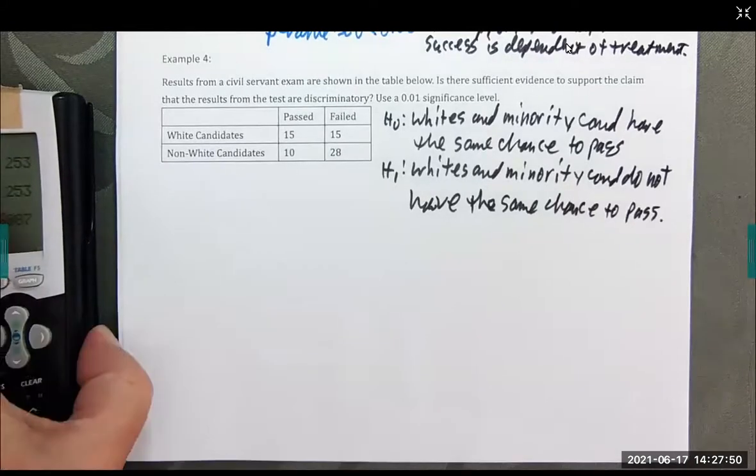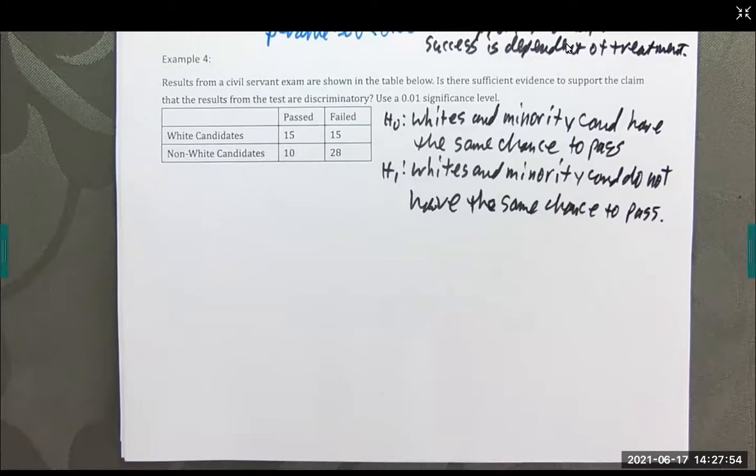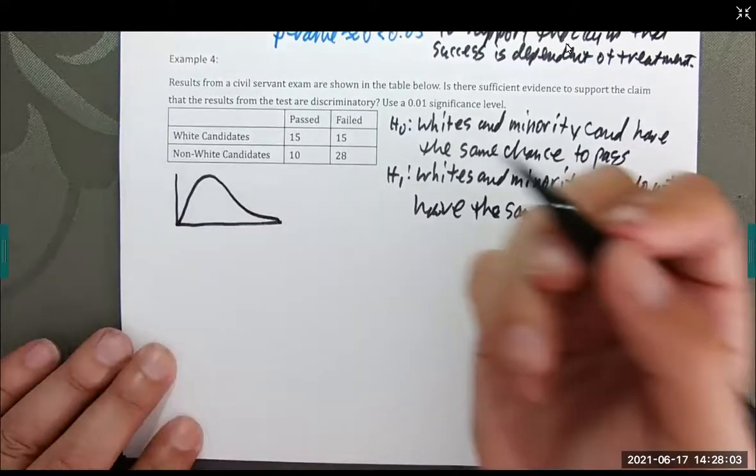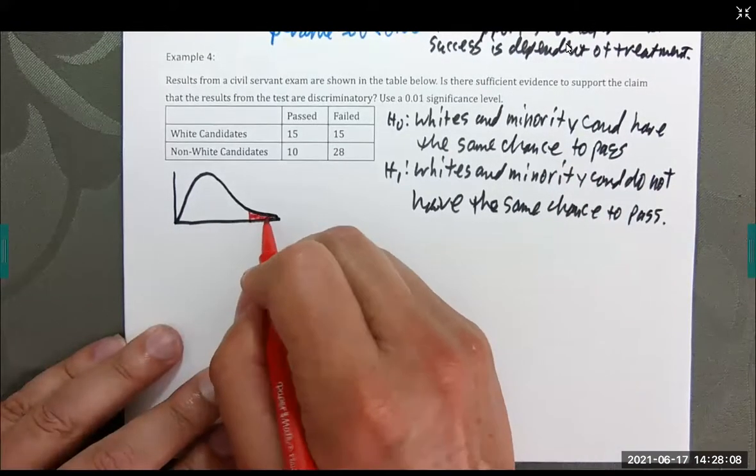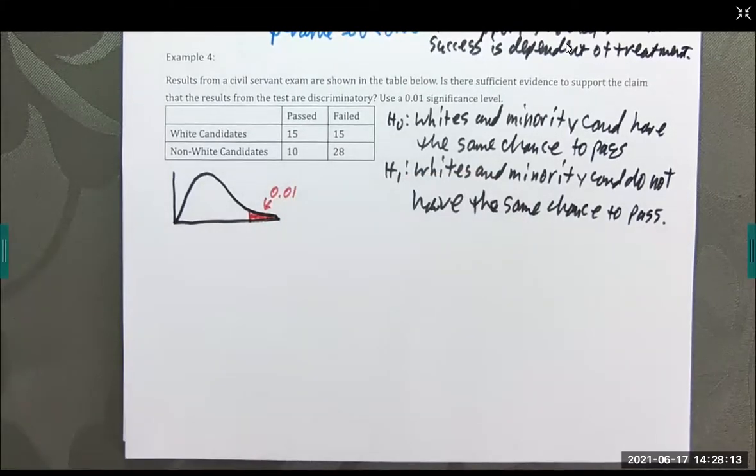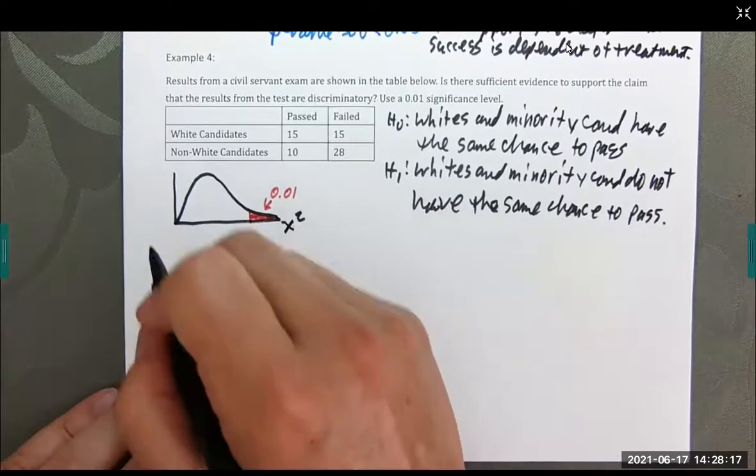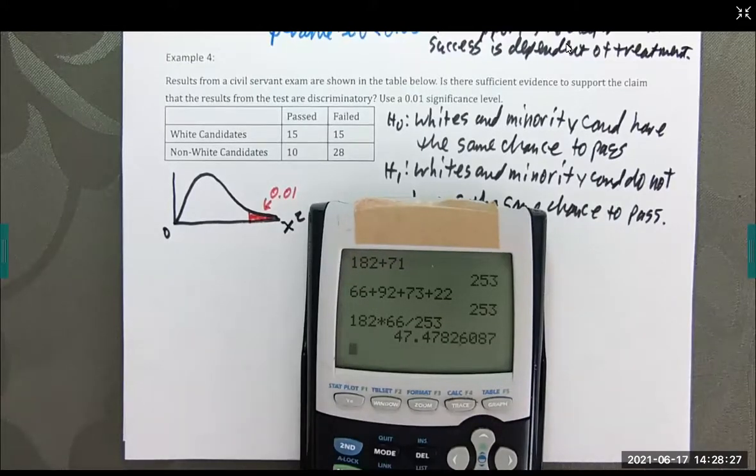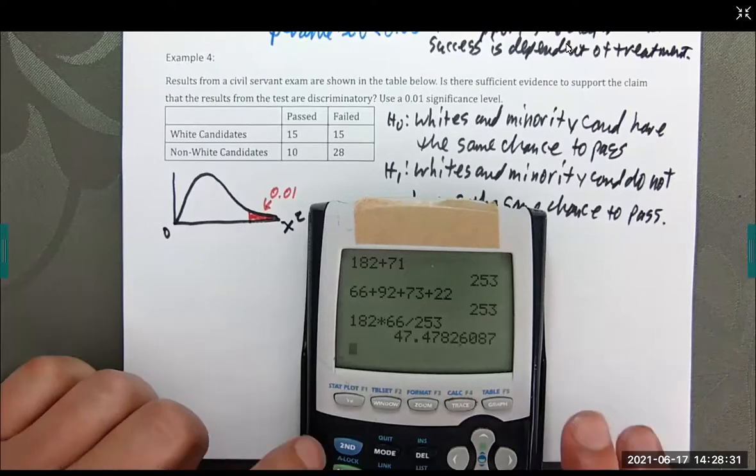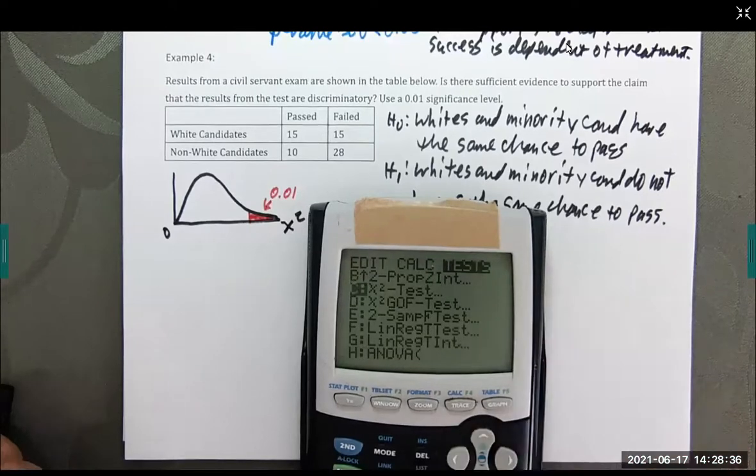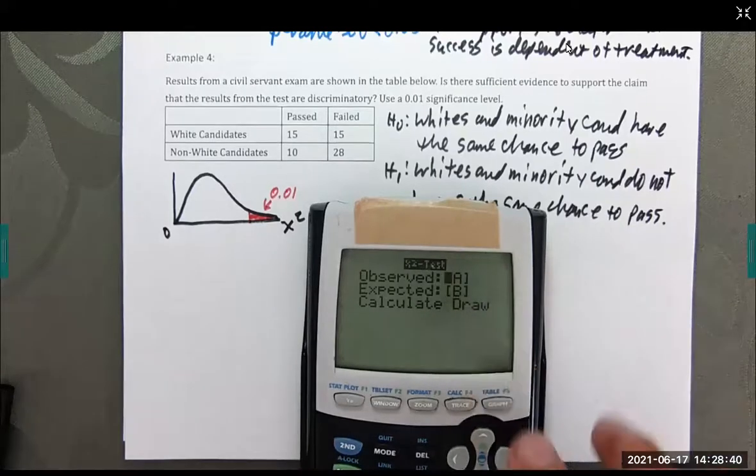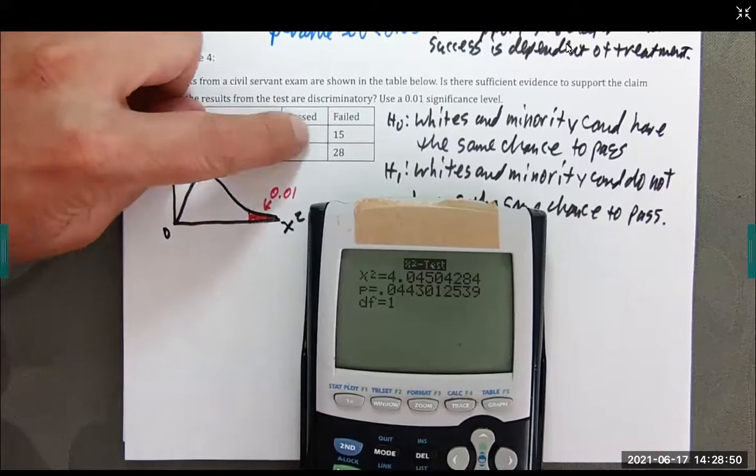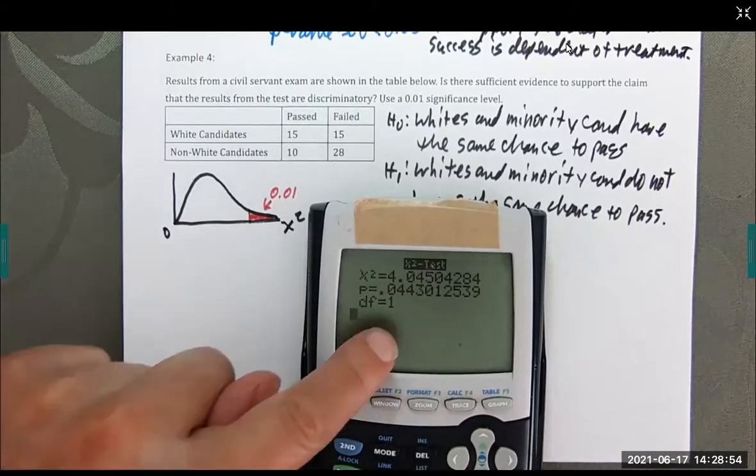The alternative hypothesis: whites and minority candidates do not have the same chance to pass. I know these, the null and alternative hypotheses are quite long, but that's okay. So let's take a look at what's going on here. And they want to use 0.01 significance level. And once again, this is a chi-squared graph. We start at 0. And we are going to come up with our test statistic and p-value. So let's run that. I already put mine into matrix A. Stat tests. I'm going to go up to the bottom of the list up to chi-squared test. So the observed are these here. Expected are going to be dumped into matrix B.